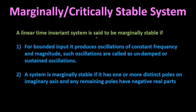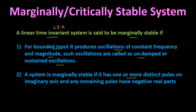A linear time-invariant (LTI) system is said to be marginally stable if, first, for bounded input it produces oscillations of constant frequency and magnitude — these are called undamped or sustained oscillations, as no damping is produced and they are not decaying. Second, a system is marginally stable if it has one or more distinct poles on the imaginary axis and the remaining poles have negative real parts. Such systems are called marginally stable control systems.